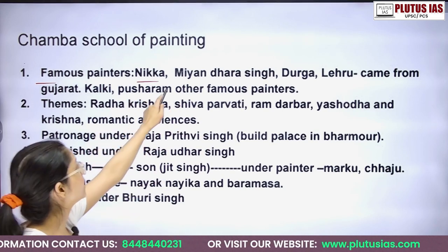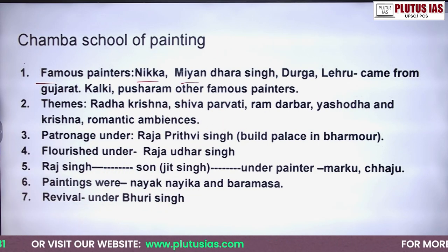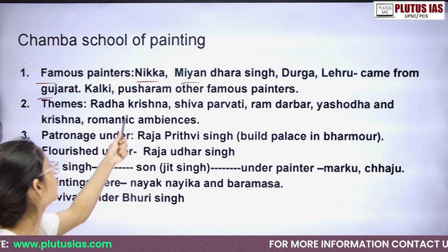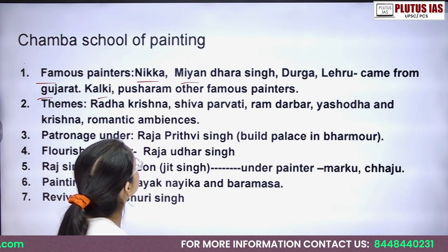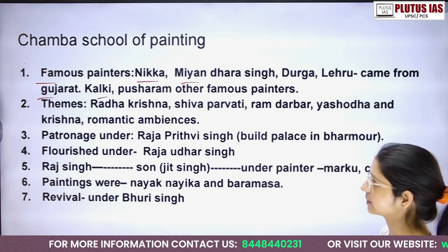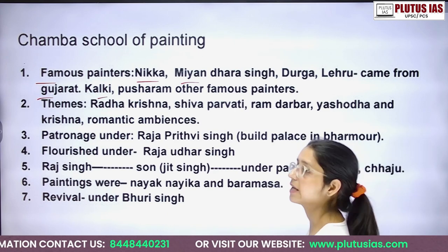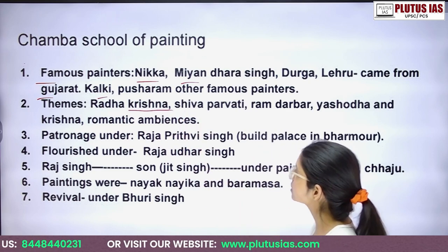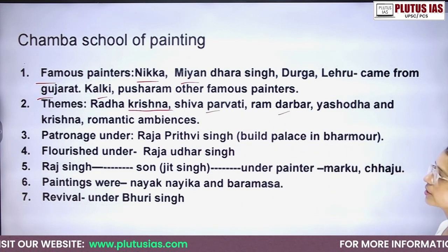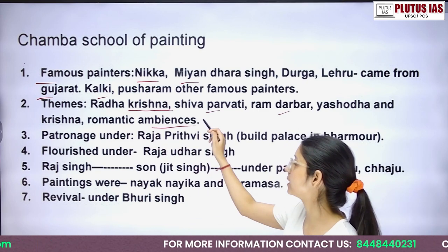The famous painters seen in the Guler and Chamba Schools include Nikka, Miyan, Dharas Singh, Durga, and Lehru — who came from Gujarat. Other famous painters include Kul Kalki and Parashuram. The themes of the Chamba School of Painting are Radha Krishna, Shiva Parvati, Ram Darbar, Yashoda Krishna, and romantic ambience.